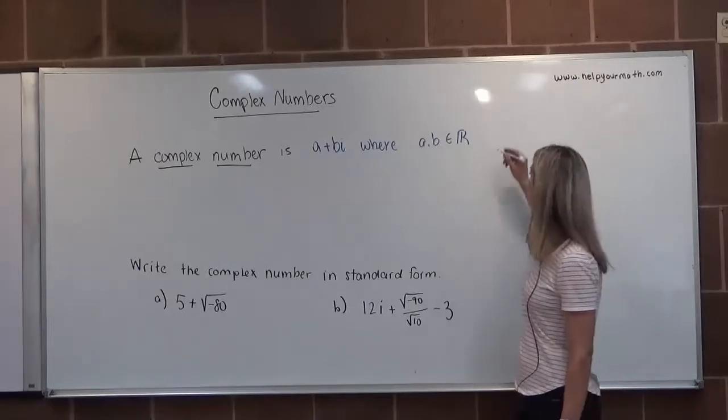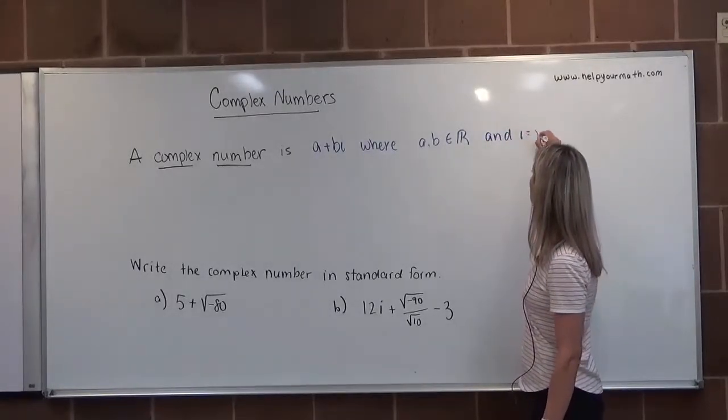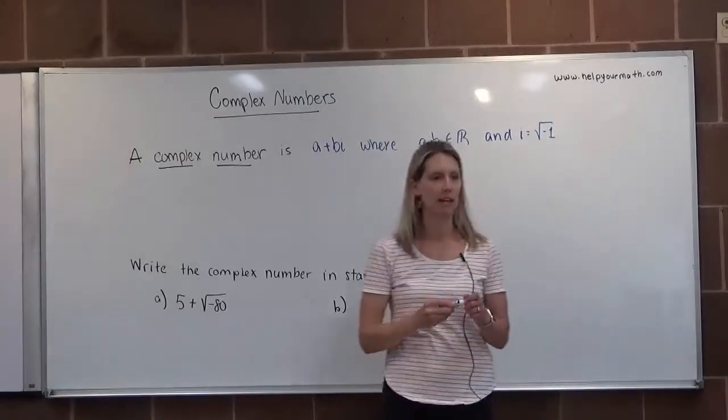So a and b are real numbers and i is the square root of negative one, the basis of the imaginary numbers.